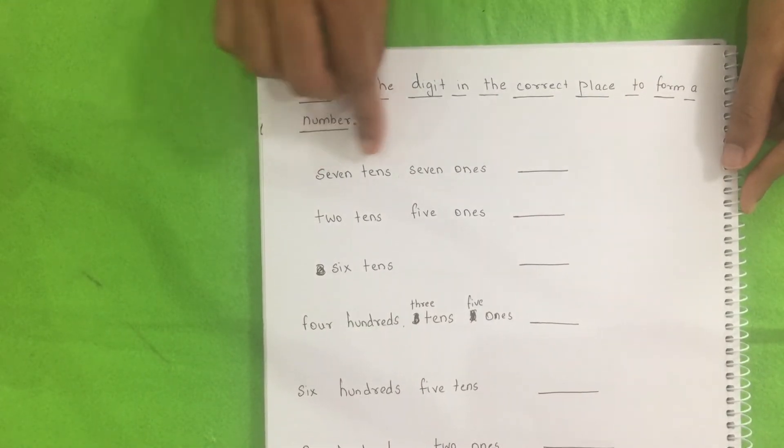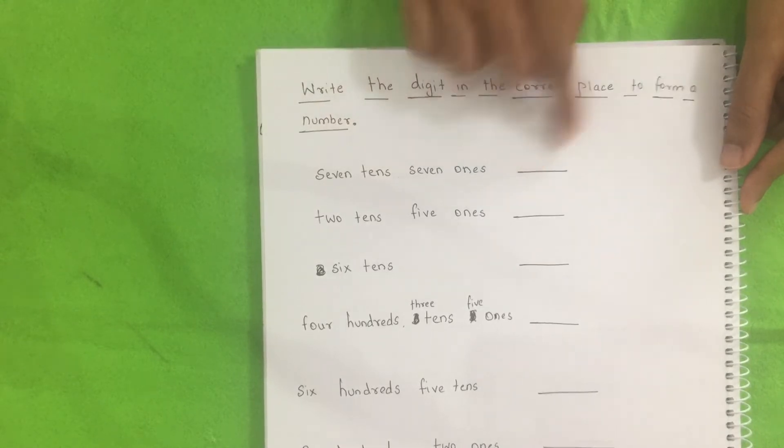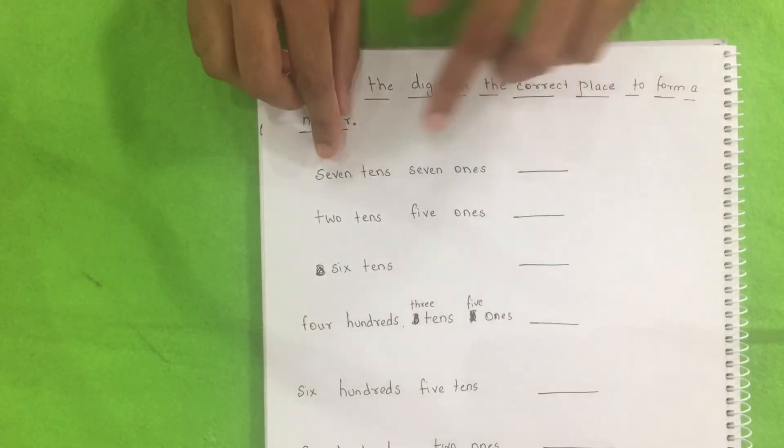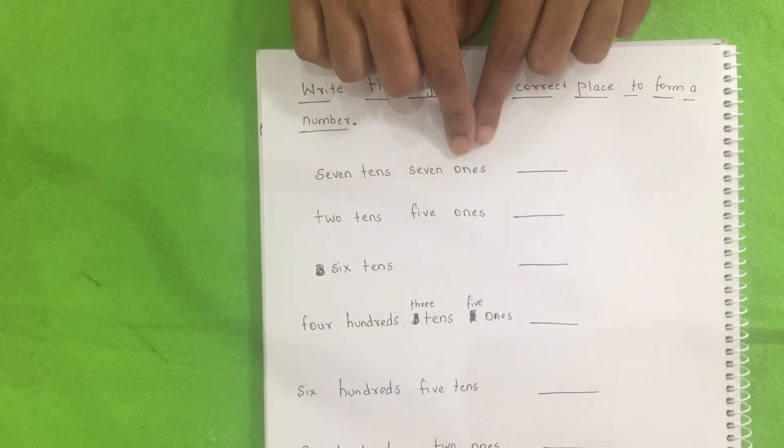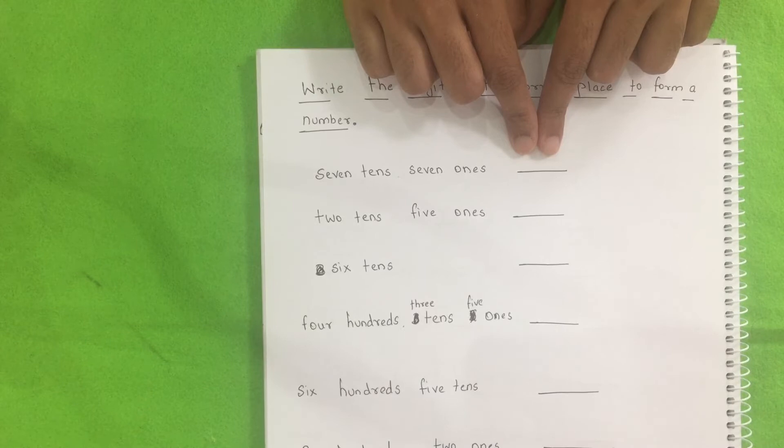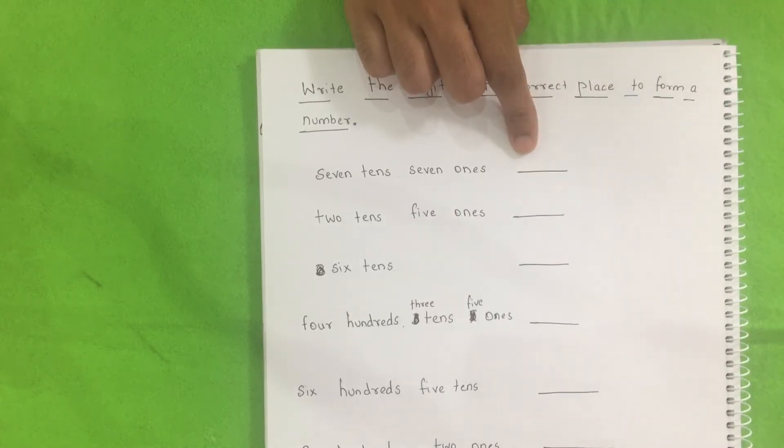It's the reverse of our previous activity. Here I have written in words and he needs to find the number. For example, here it is seven tens and seven ones. So the number is 77. Can you write it?